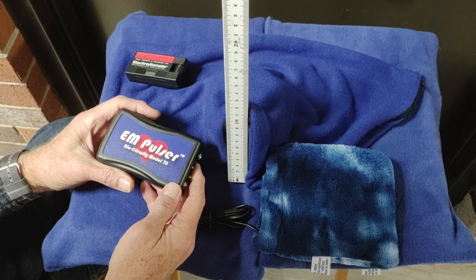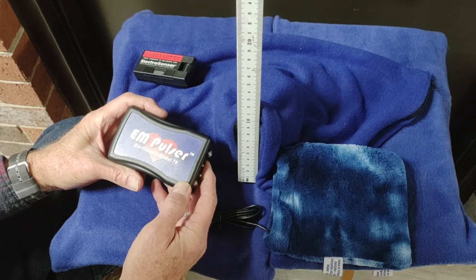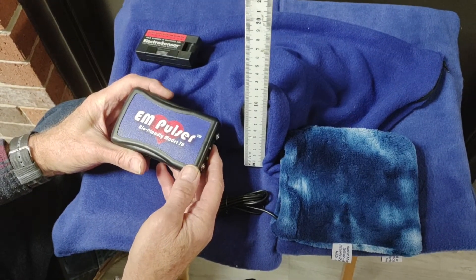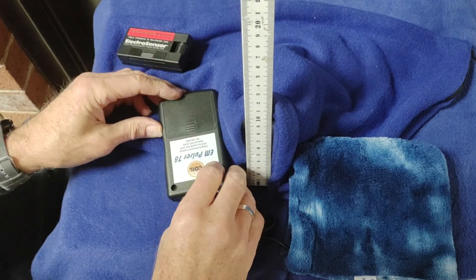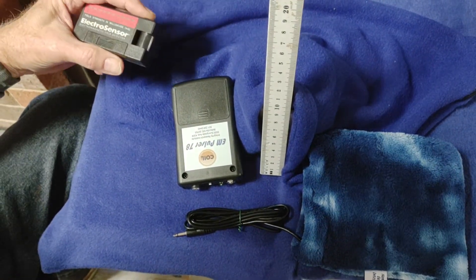Today we're measuring the output of the AM Pulser Model 78, which has a 7.8 Hertz Schumann resonance pulse rate. We're turning it over so the coil magnetic field output is available on the back side.